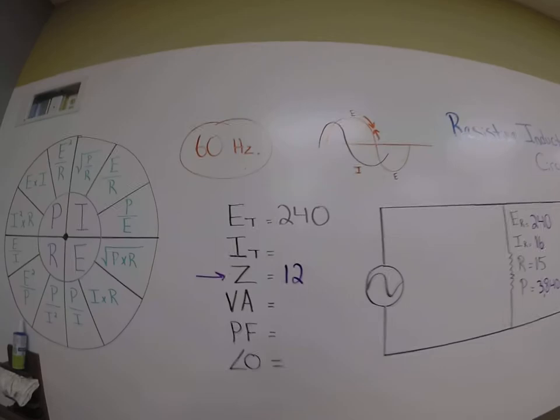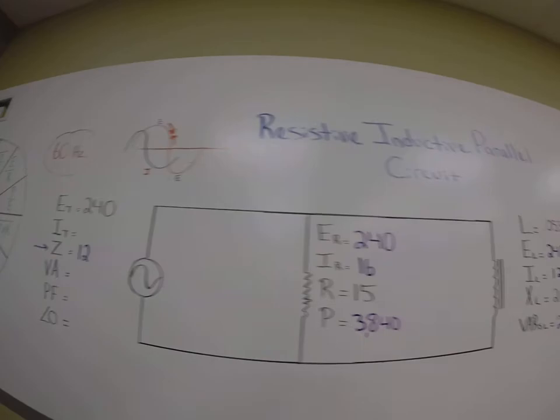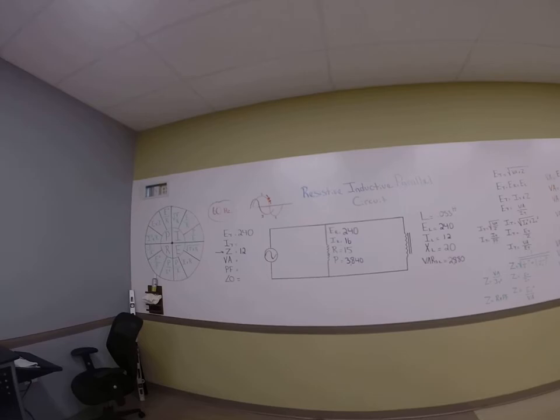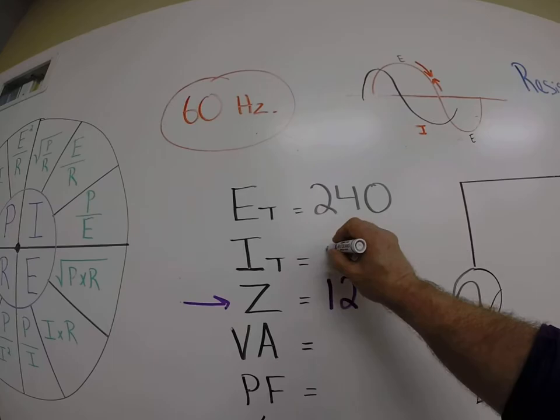Okay. The only thing that's left over here is this column. This is essentially E divided by Z, because impedance is resistance. So, if I put 240 divided by 12, well, let's go do that in the calculator. 240 divided by 12 gives me 20. All right. Here we go. 20.